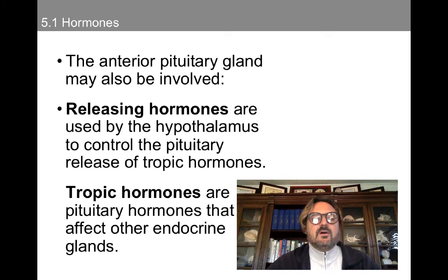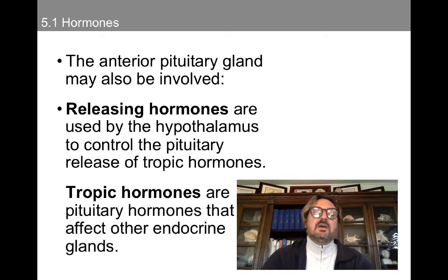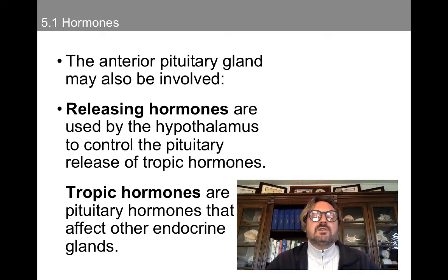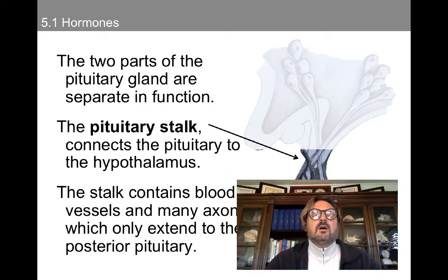The anterior pituitary gland may also be involved in releasing tropic hormones. We have releasing hormones, which are used by the hypothalamus to control the pituitary release of tropic hormones, whereas tropic hormones are pituitary hormones that affect other endocrine glands. The two parts of the pituitary gland are separate in function. The pituitary stalk connects the pituitary to the hypothalamus and contains blood vessels and many axons which only extend to the posterior pituitary.